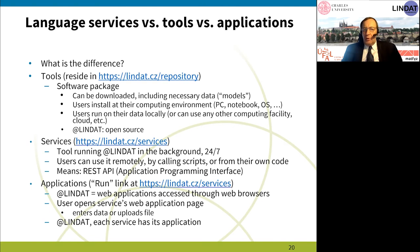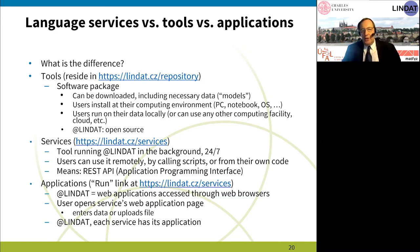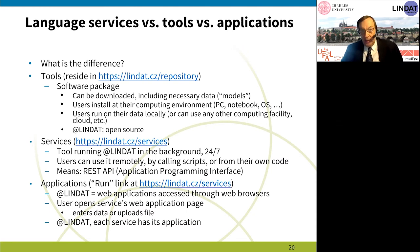Users get the results back in a standardized format like JSON and can do whatever they want with them. As opposed to tools, they do not have to install anything in their own computing environment — they can use any environment, even one completely incompatible with the tools, as long as they can call the service remotely. Finally, we also run applications, which are user interfaces accessible through a web browser. For each service we have a link called 'Run', and clicking it gives you a web page that is a front end to the service running in the background.